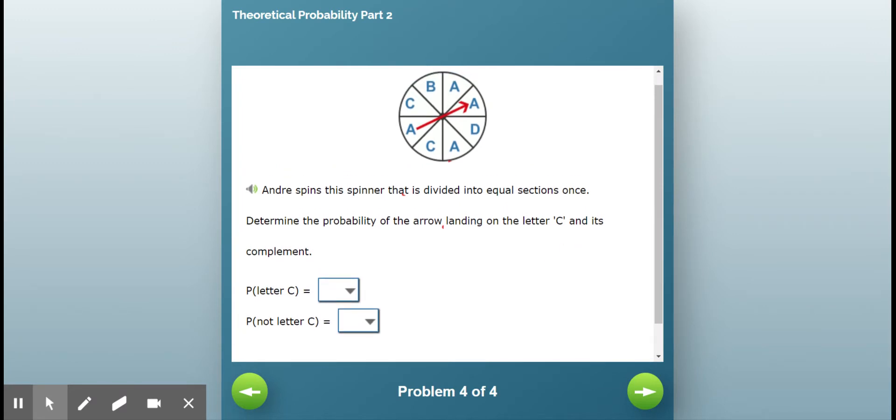So the probability that it will not land on the letter C. So how many C's are there? There are two. And how many total letters are there? I can't tell my numbers and letters apart today.